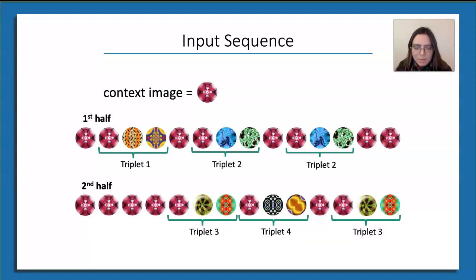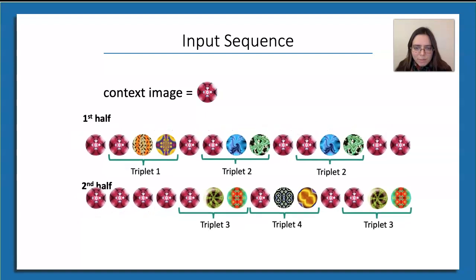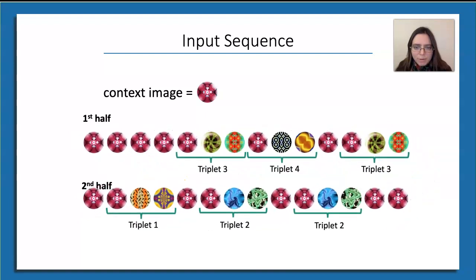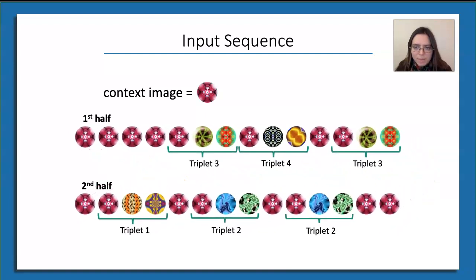There were two distinct sets of triplets. One set of triplets would appear in the first half of the block, and a separate set would appear in the second half. Depending on the identity of the context image, which set of triplets was displayed first would change, and this is known as the high-level order assignment of the context.